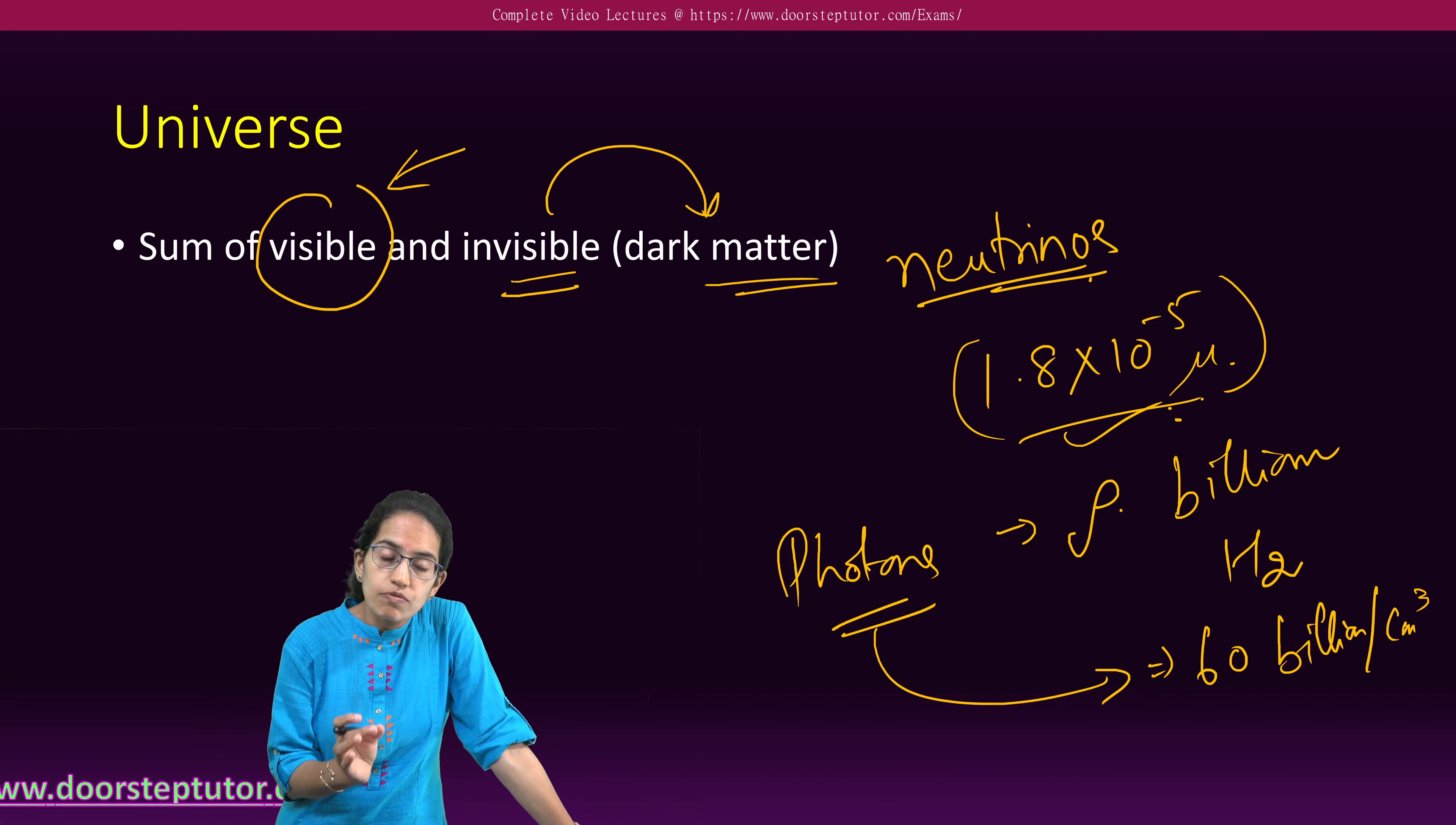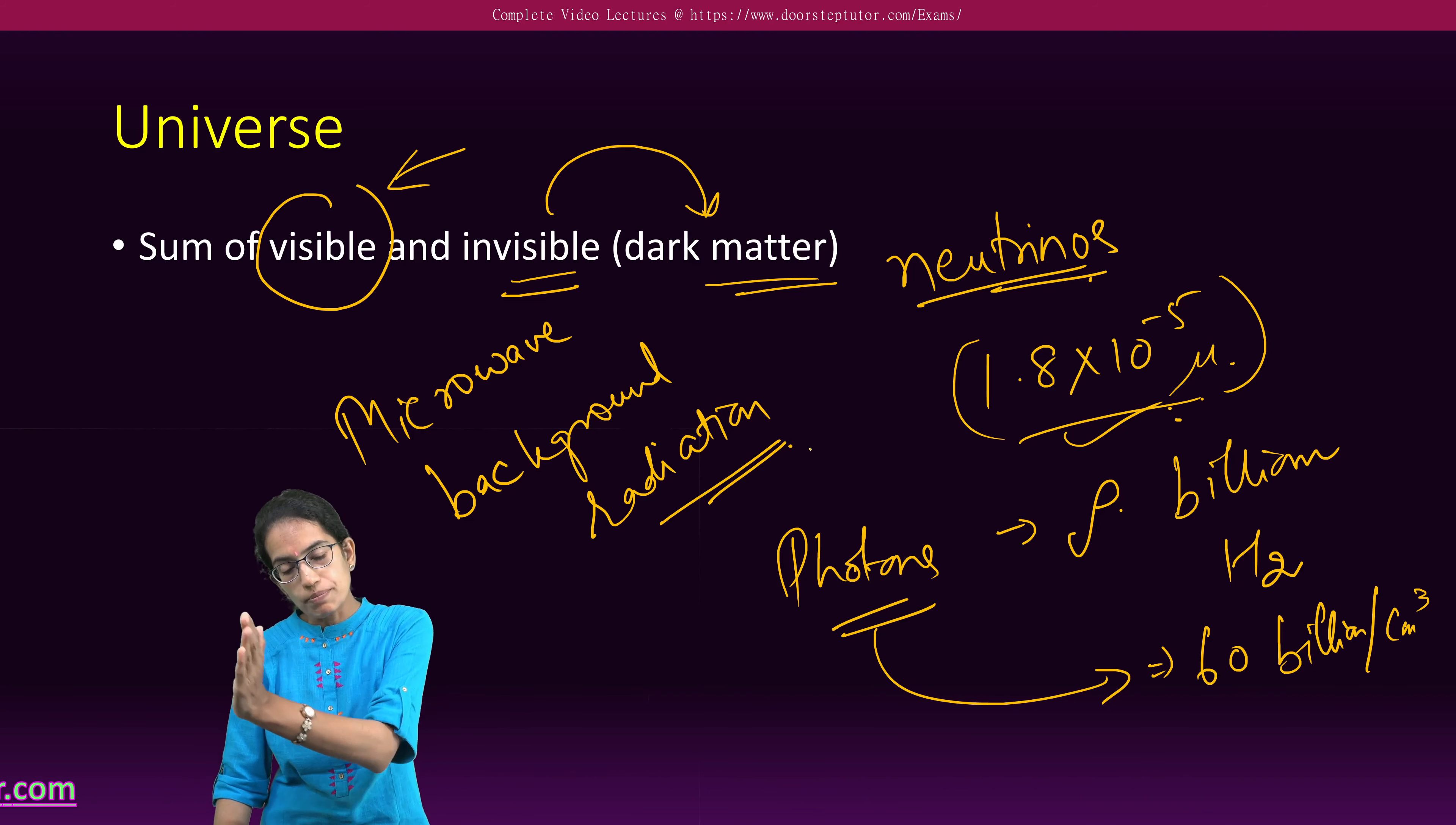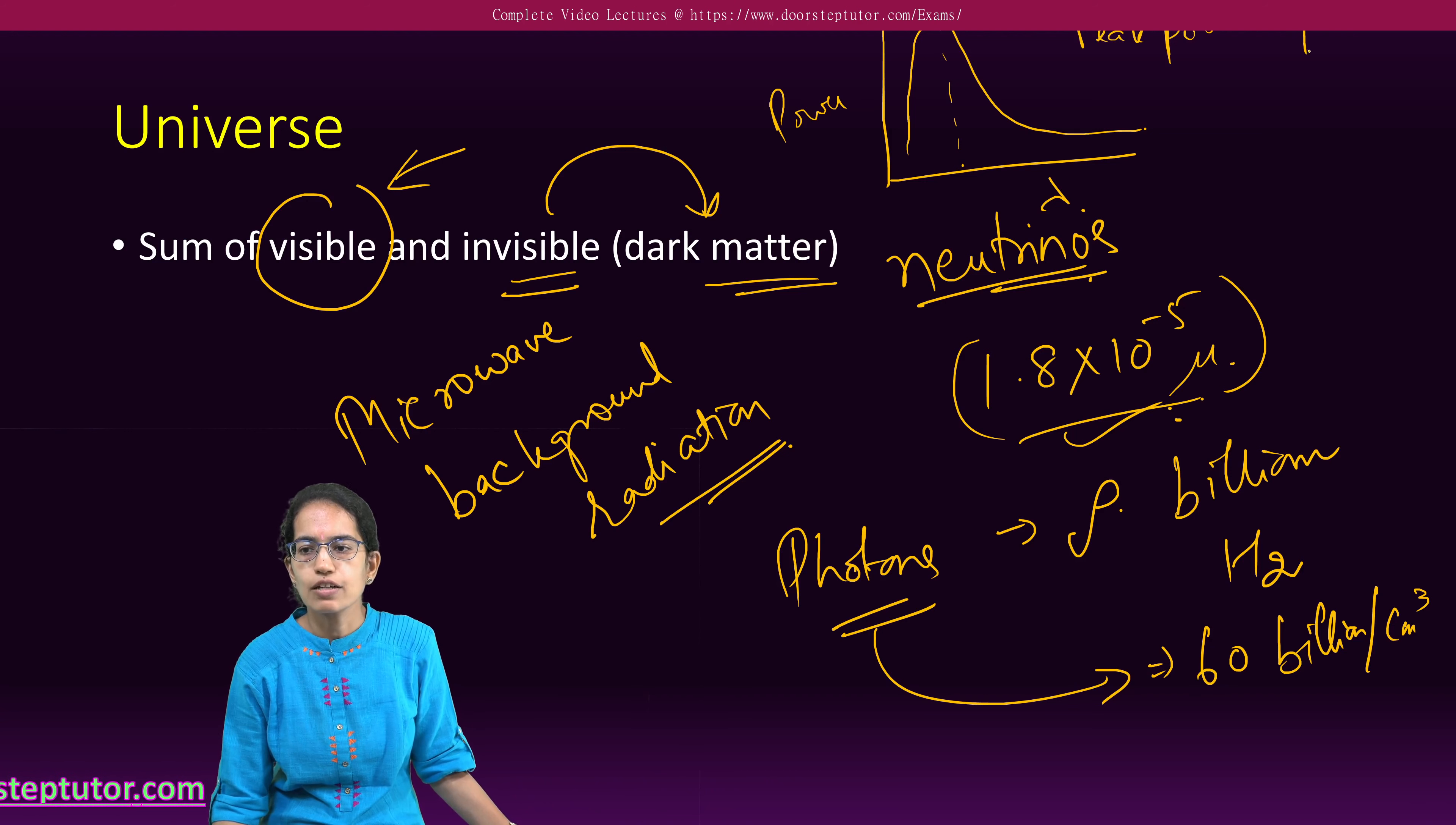One very important term we understand when we talk about the big bang theory, which we would again discuss later in this lecture, is the term microwave background radiation. Now this microwave background radiation from the big bang red shifted all the way down to the microwave band. That means on a graph where I am plotting power versus wavelength, this is a curve that I would get which is similar to a black body radiation which would say that the peak power occurs somewhere at 1.26 millimeters of wavelength.